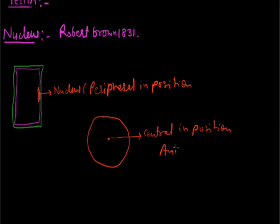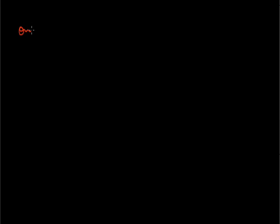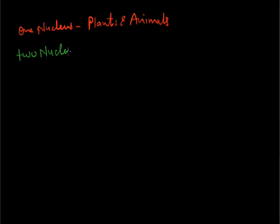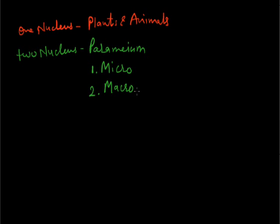Normally cells have one nucleus. But in some living beings there are two nuclei. For example, Paramecium has two nuclei — one is called the micronucleus and another is the macronucleus. In the case of some fungi, the mycelium is also dikaryotic, meaning it has two nuclei.